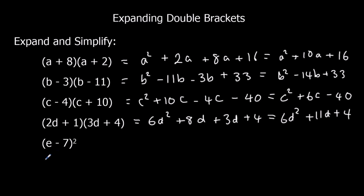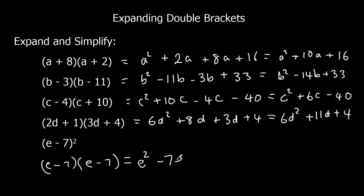Finally, we've got e minus 7 squared — so that's e minus 7 multiplied by e minus 7. e times e is e squared. e times minus 7 is minus 7e. Minus 7 times e is minus 7e again. And minus 7 times minus 7 — a negative times a negative makes a positive — so that's positive 49. Simplifying: minus 7e minus another 7e is minus 14e. So the final answer is e squared minus 14e plus 49.